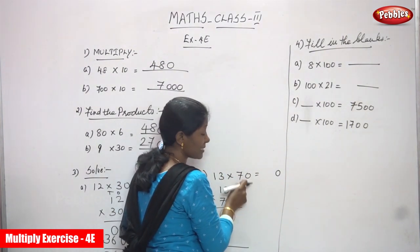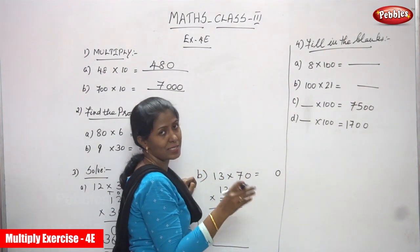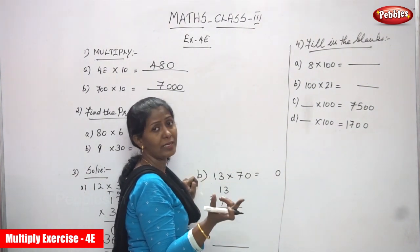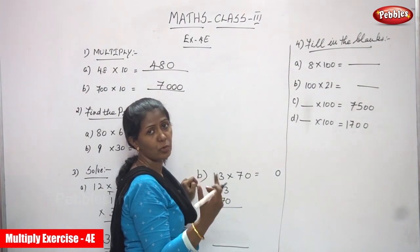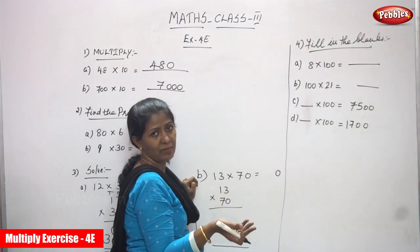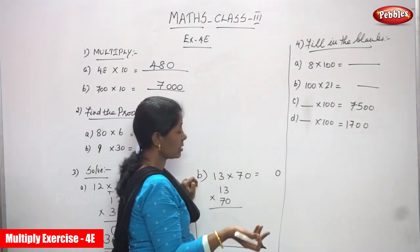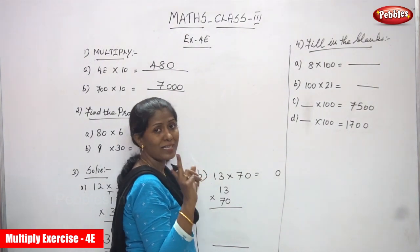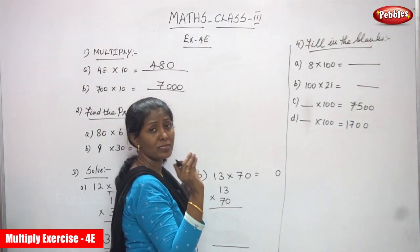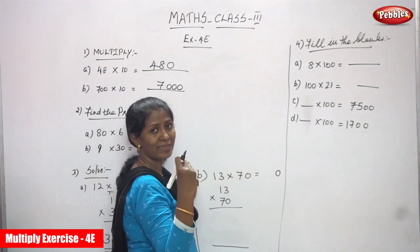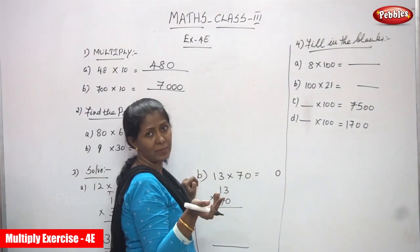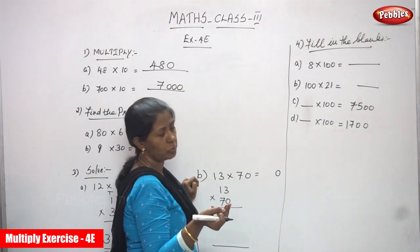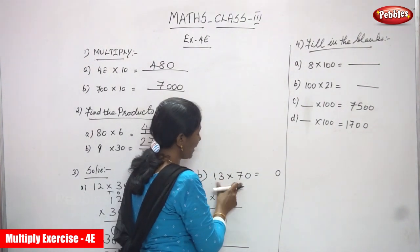10 means one zero. 70 means seven-zero — that is 70. So 10 means only one zero. You must consider the zero, write the zero at the end first, then multiply the remaining numbers. That is rule one. If you want rule two, first multiply the numbers, then check how many zeros.